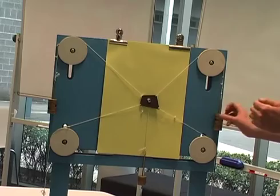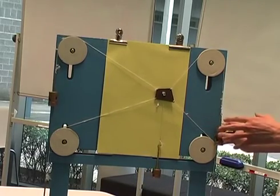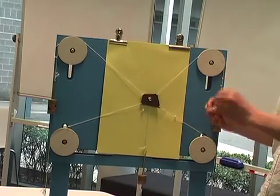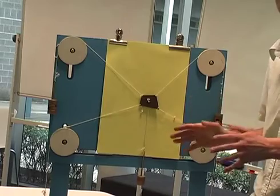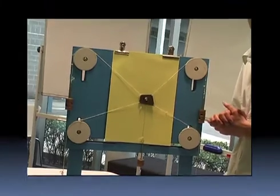An important note: notice when I pull down here, I've changed the system, and when I let go, it finds an equilibrium position. This means there's no motion within the system itself, hence all the forces are balanced on the central metal plate.